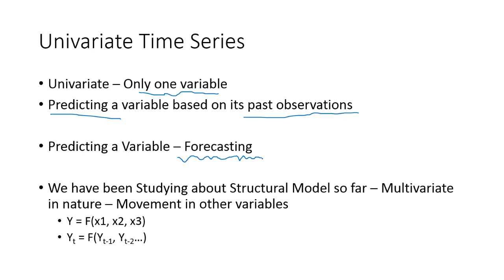This is the mathematical form you can see. Y is our dependent variable and there are so many independent variables x1, x2, x3 and so on. And we predict Y based on the movements in the independent variables. But that is not the case in the case of univariate time series model.